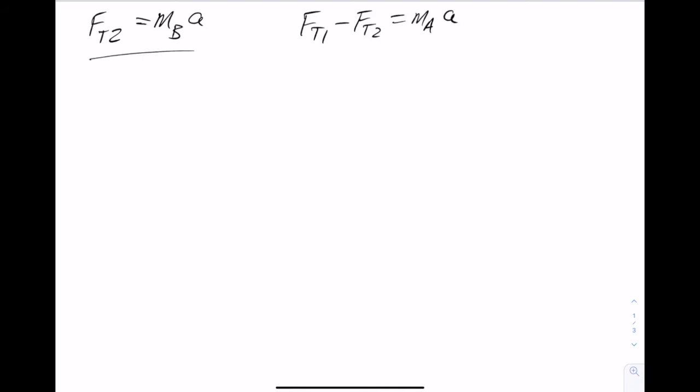So B has a mass of 2,000 kilograms, and the acceleration is 0.28 meters per second squared. And we can do that calculation. That gives me a force of 560 newtons. So now I know one of the tensions.